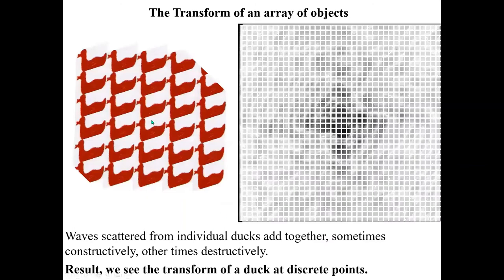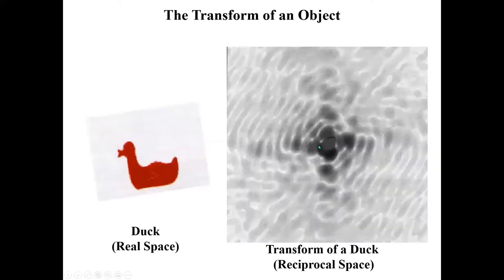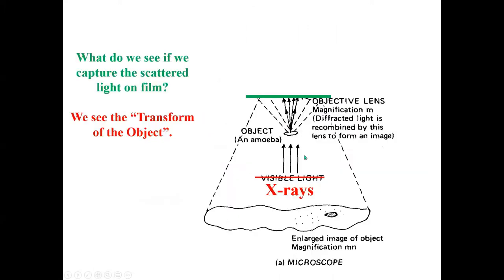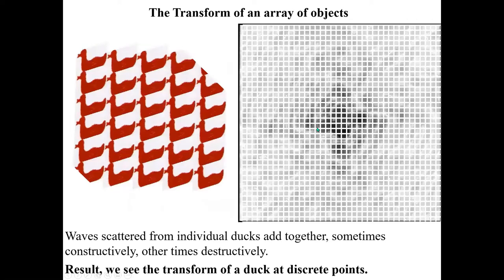What if we have a crystal of ducks — an array of ducks? Here's a 2D crystal of ducks. When you have scattering from this duck and this duck and this duck all at the same time, sometimes the scattering reinforces, but in other parts of the transform it combines destructively and cancels out. So we see the transform of the duck at certain places, but in other places we no longer see it due to destructive interference. We still see the transform in enough places to determine a very high-resolution structure of the ducks.